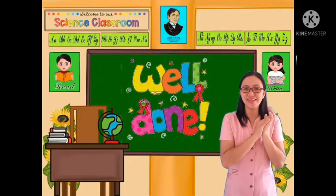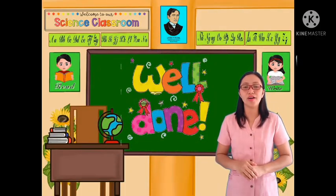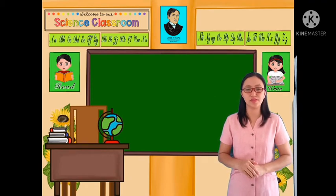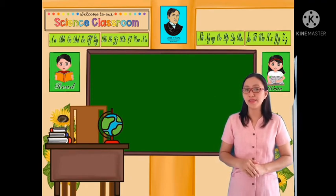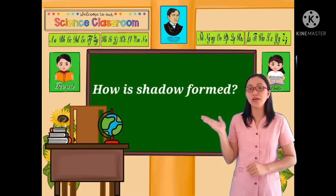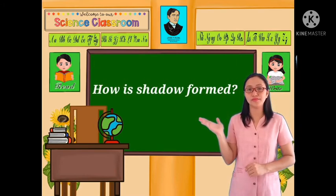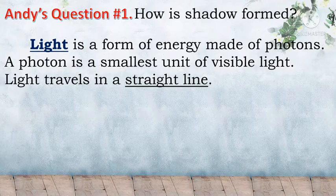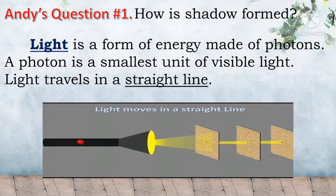Well done, kids! Now, we are ready to help Andy to answer all his questions. For Andy's first question: How is shadow formed? Light is a form of energy. A photon is the smallest unit of visible light. Light travels in a straight line.